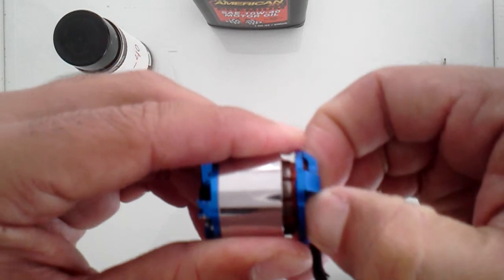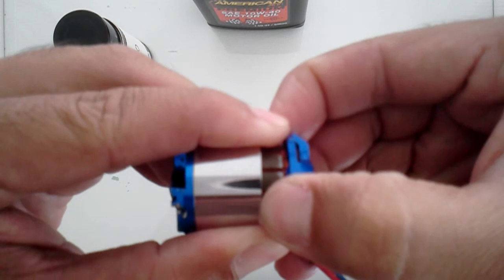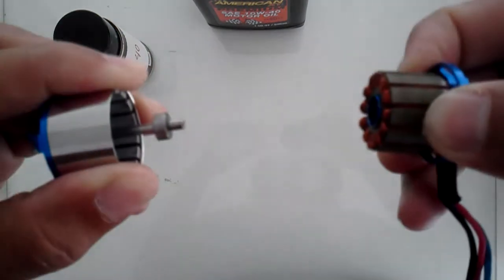Take apart the motor, just pull the bottom part out. It's going to be a little snug because you have magnets in there holding it. And there you go.